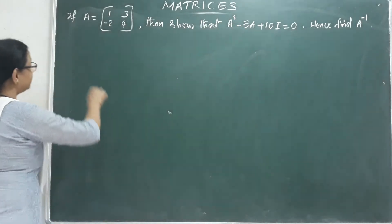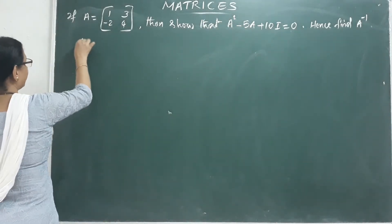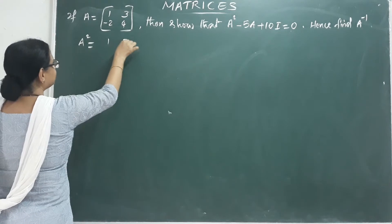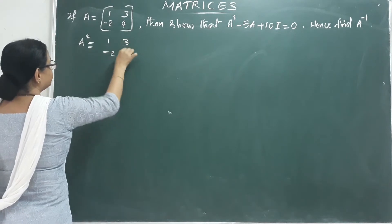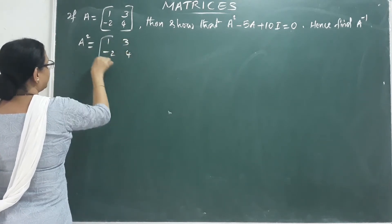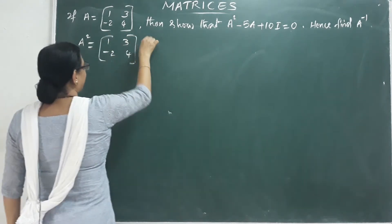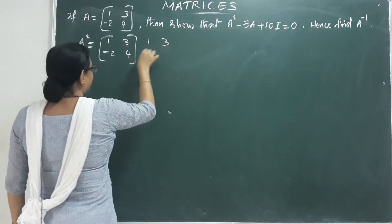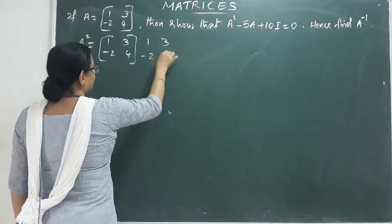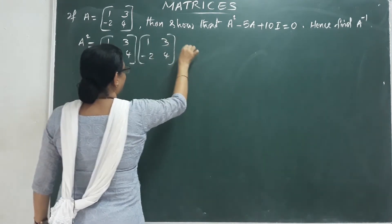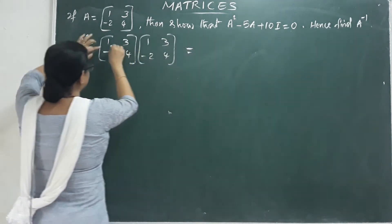First, we will find A squared. A squared is A into A, that is the matrix [[1, 3], [-2, 4]] multiplied by itself. Apply the multiplication here.